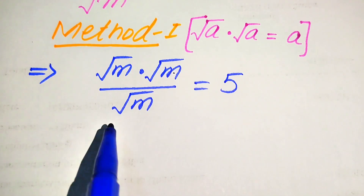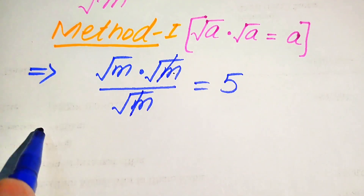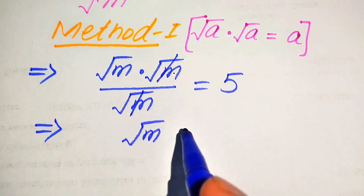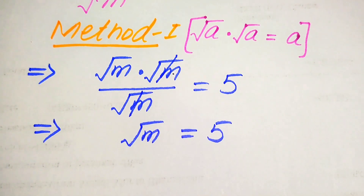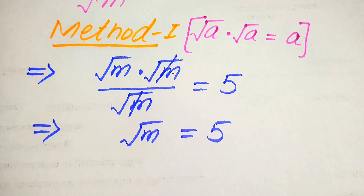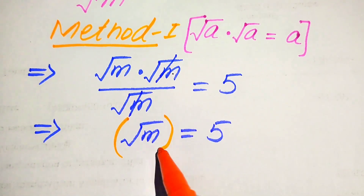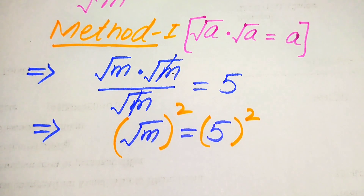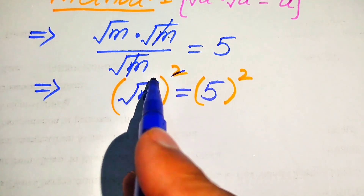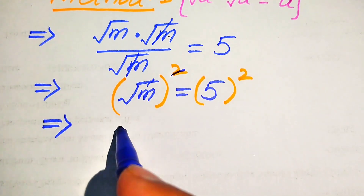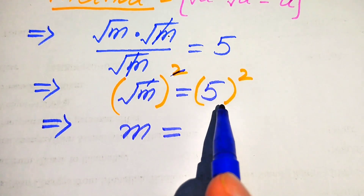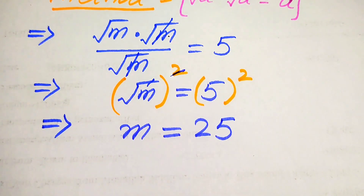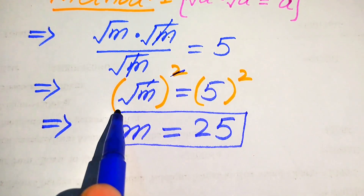We simplify further: this square root of m in the numerator and this square root of m in the denominator cancel, and we get square root of m equals 5. To solve for m, we take the square of both sides. Squaring gives us square root of m whole squared equals 5 squared, so the square root cancels and we get m equals 25. This is the final value of m from Method 1.